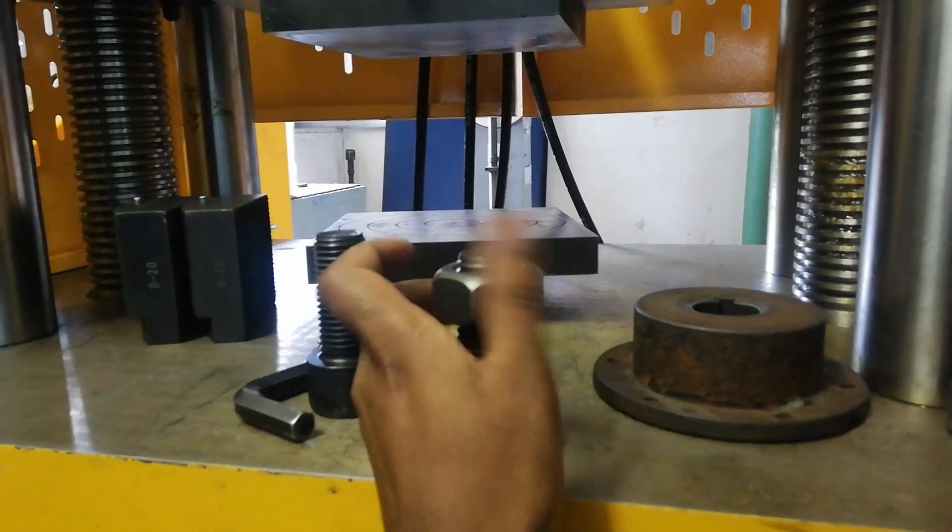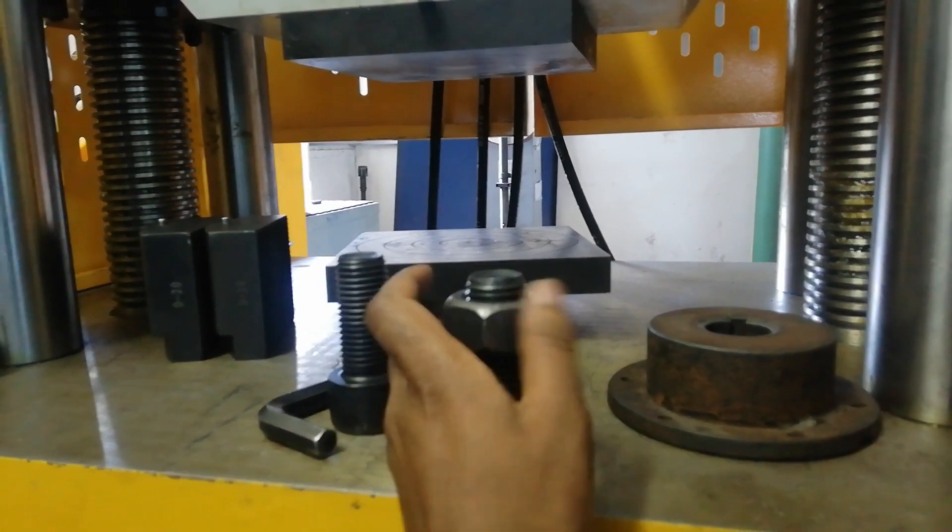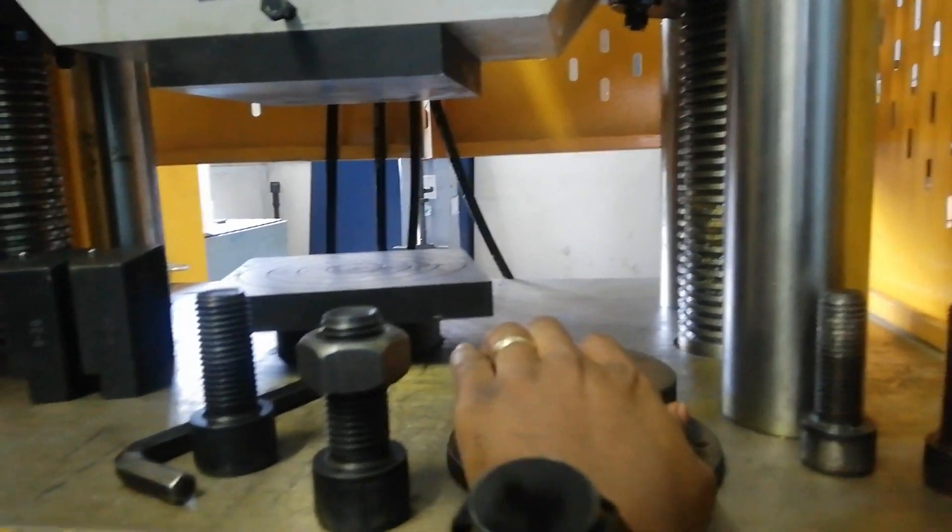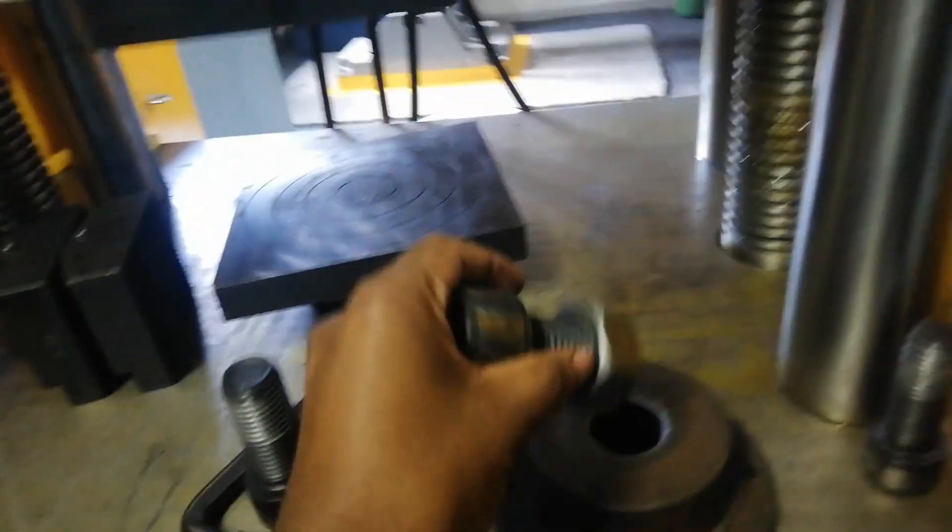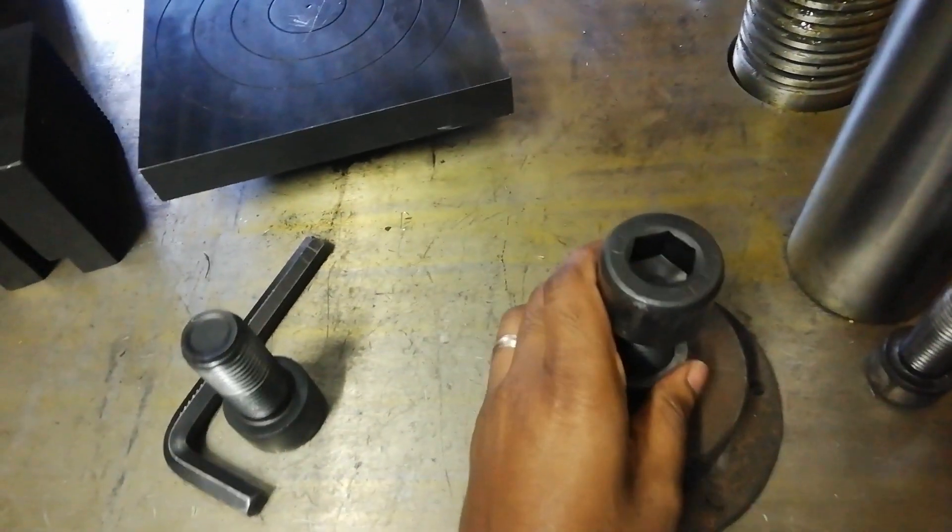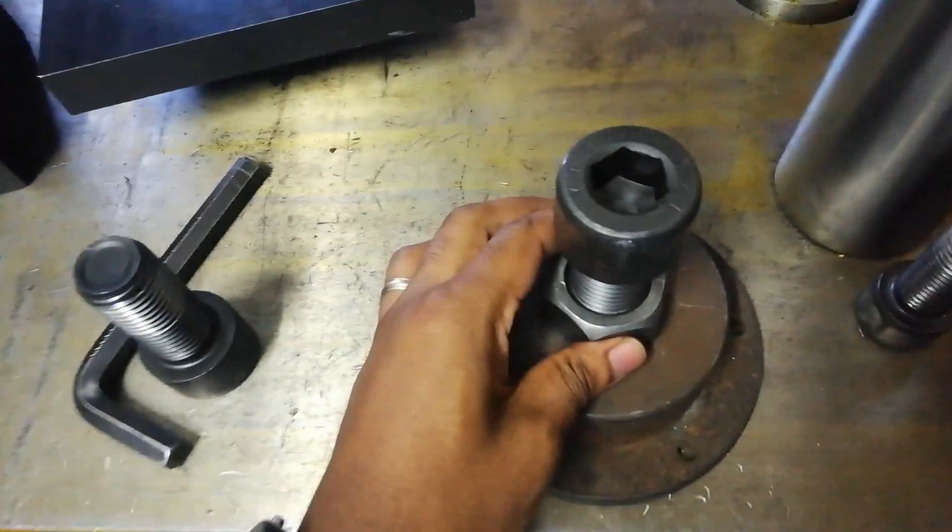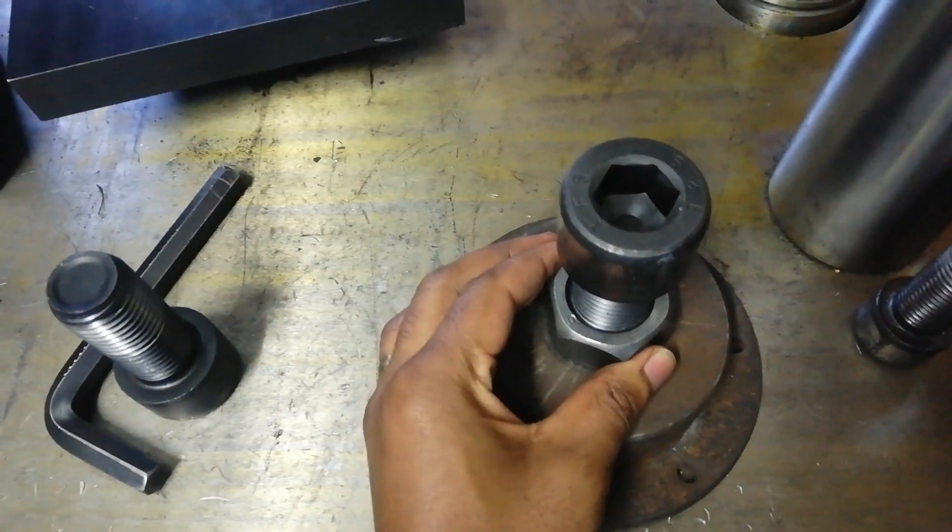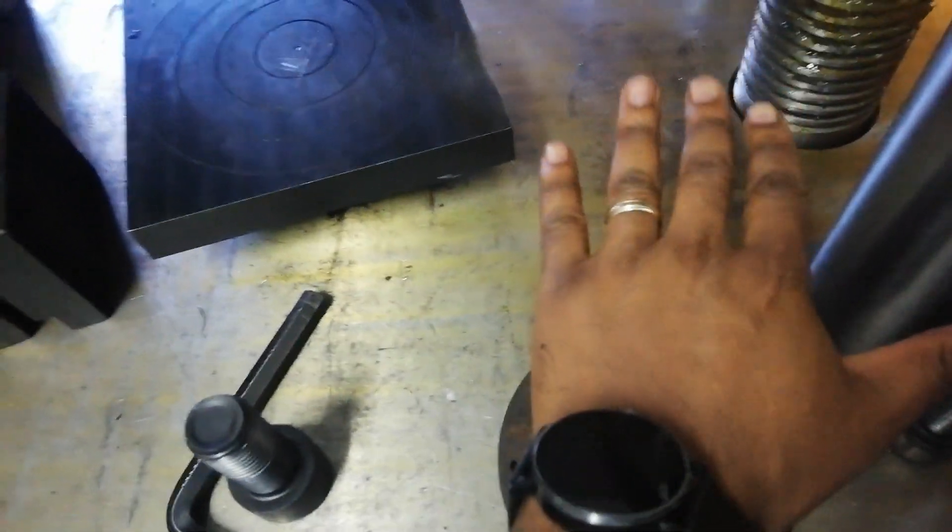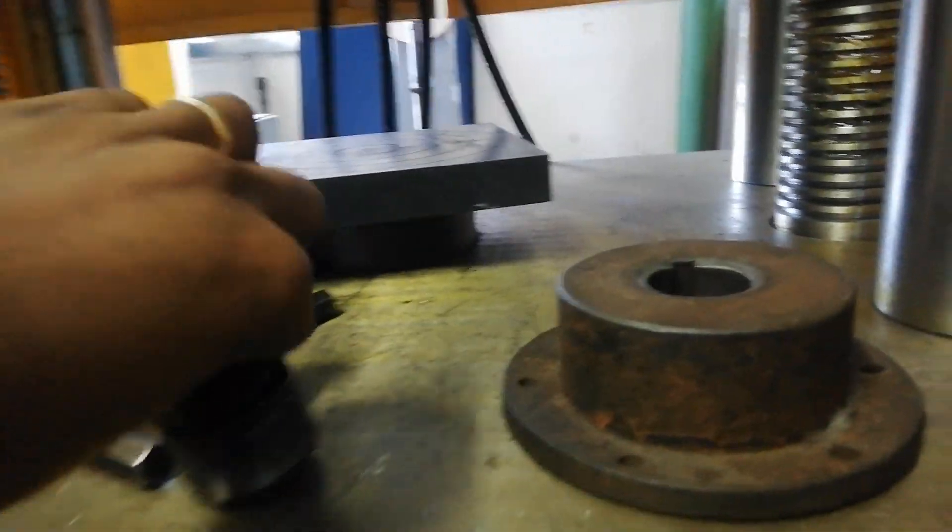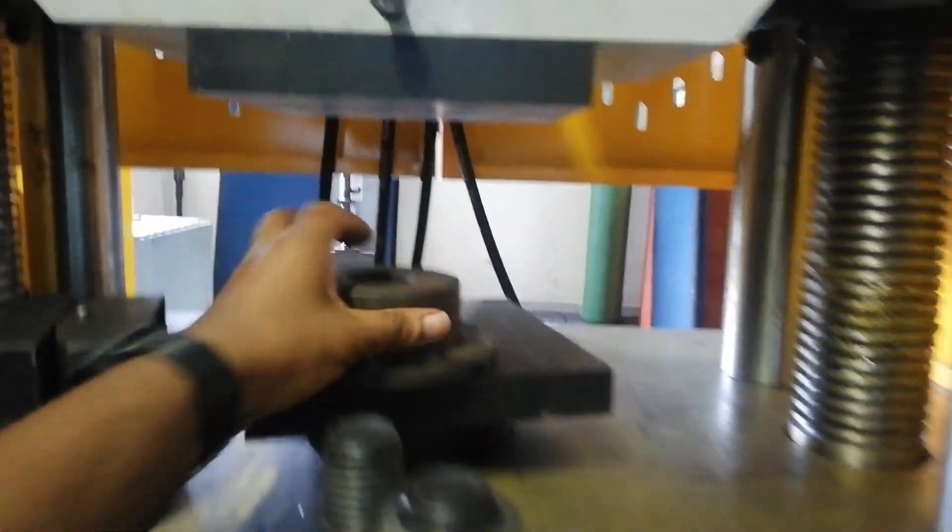While we are doing this, the thread on the nut shall not strip or the nut shall not break. Each nut according to the size and the grade has a specified proof load amount. Once during the test the load is reached, we need to make sure that the load is maintained on the assembly for 15 seconds.